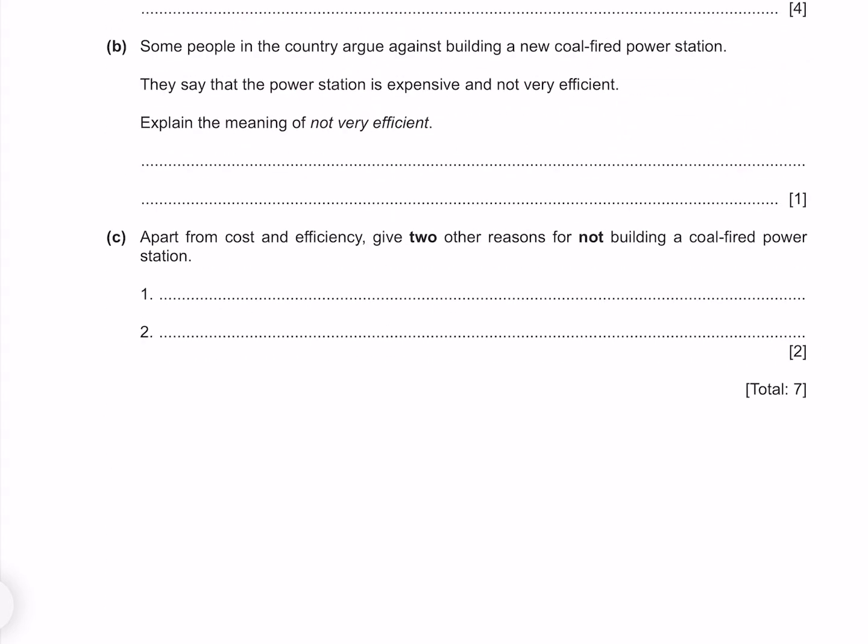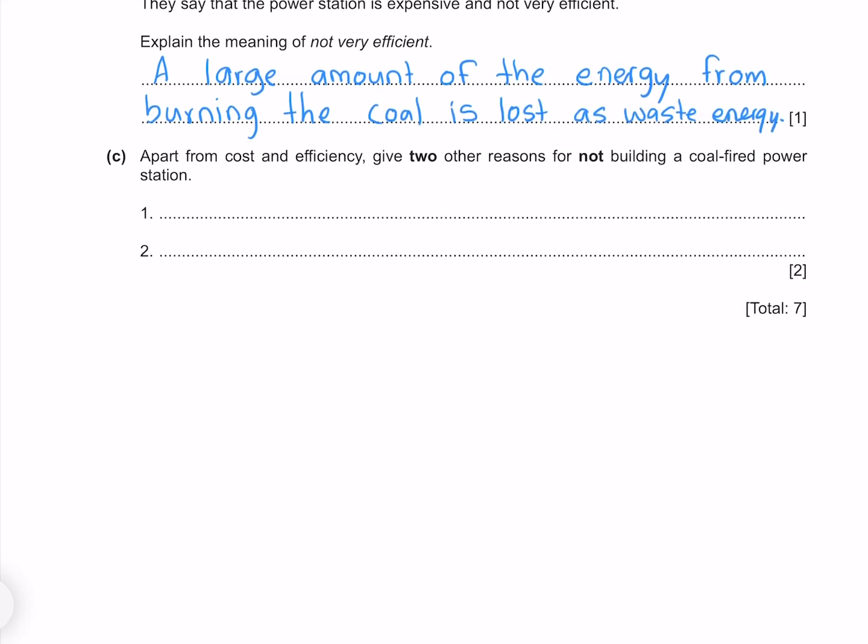Some people in the country argue against building a new coal-fired power station. They say that the power station is expensive and not very efficient. Explain the meaning of not very efficient. What this means is that a large amount of the energy from burning the coal is lost as waste energy. Apart from cost and efficiency, give two other reasons for not building a coal-fired power station. Possibly the most obvious is the release of greenhouse gases driving climate change, and also that it's non-renewable.